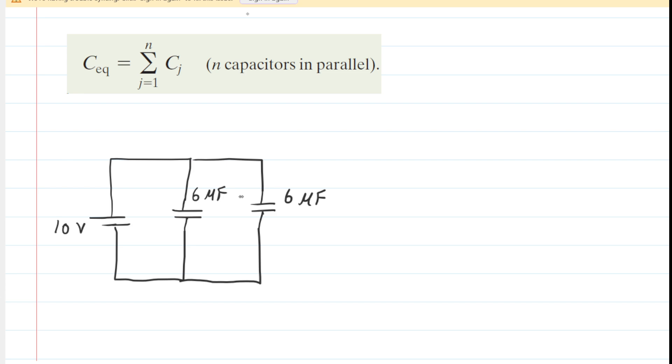We're going to combine these two parallel capacitors into a single equivalent capacitor. Whenever we have capacitors in parallel, to get the equivalent capacitance, we simply sum the individual capacitance values. In this case, the equivalent capacitance equals 6 microfarads plus 6 microfarads, so the equivalent capacitance is 12 microfarads.